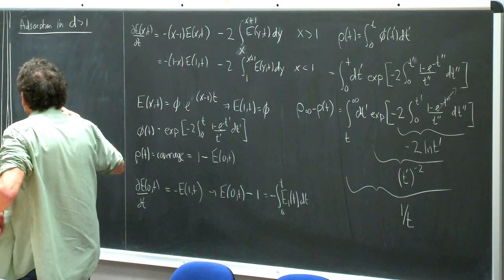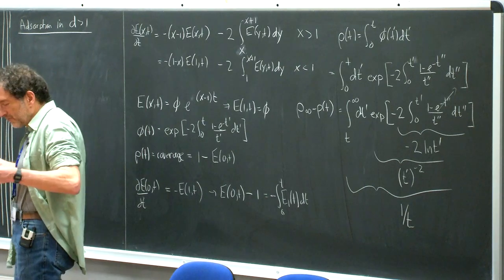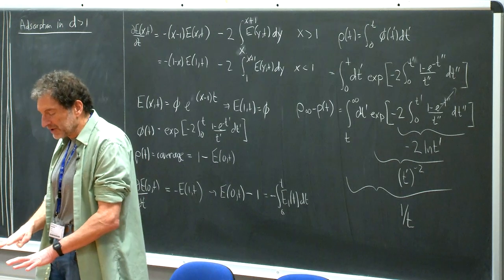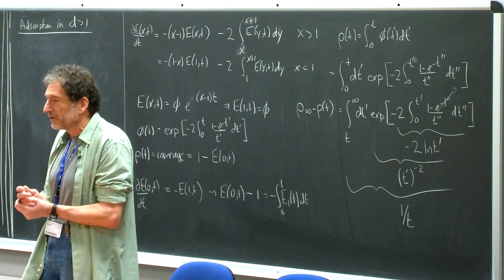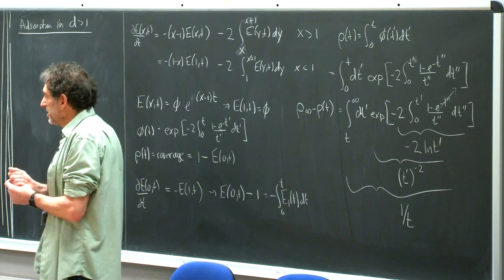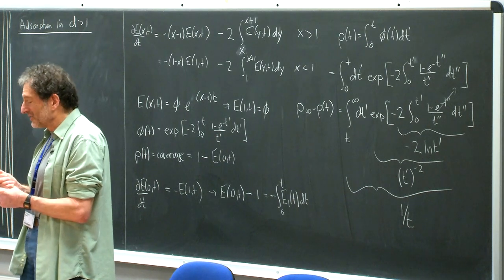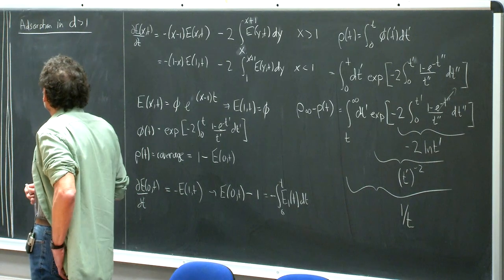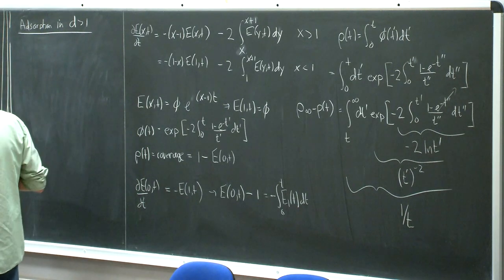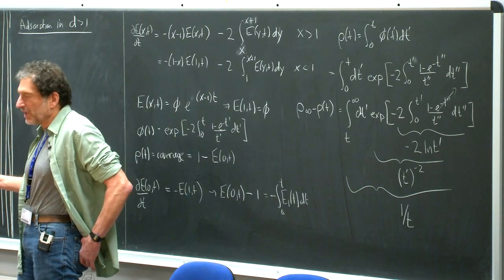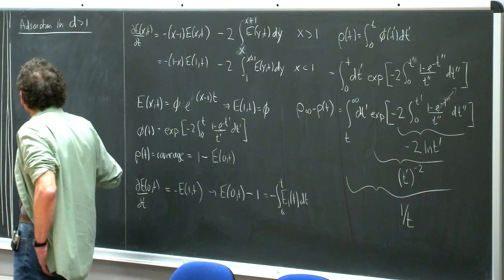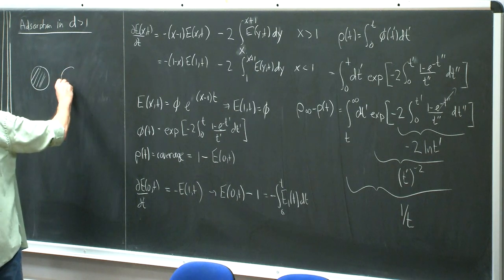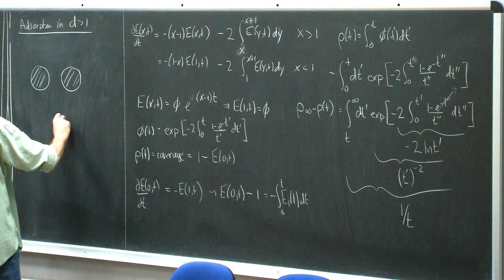Let me do two dimensions since I can draw it on the blackboard. We adsorb circles on a plane: whenever there's an open spot that can fit a coin we put another coin, continuing until remaining spots are too small to fit a coin, reaching jamming. The question is how quickly do we reach jamming. The actual jamming density is a hard unsolved problem, but at least we can determine how quickly jamming is approached.